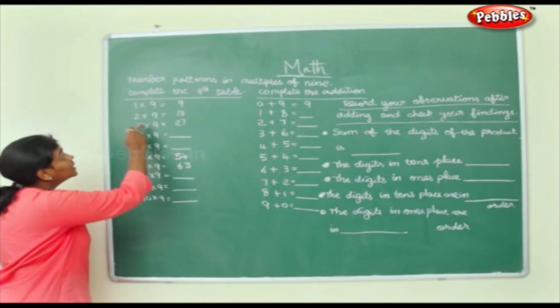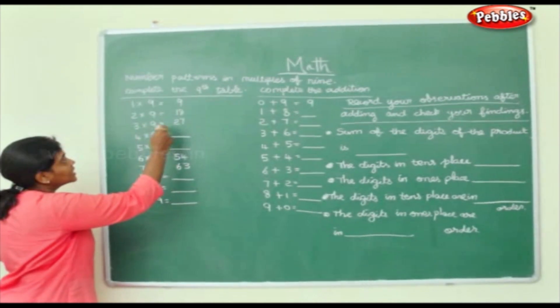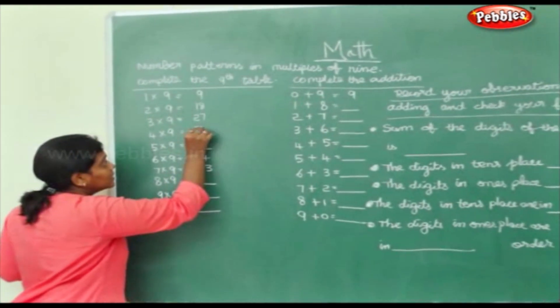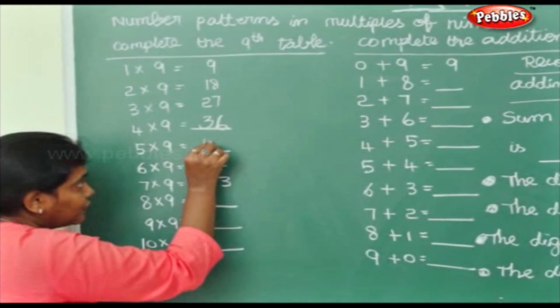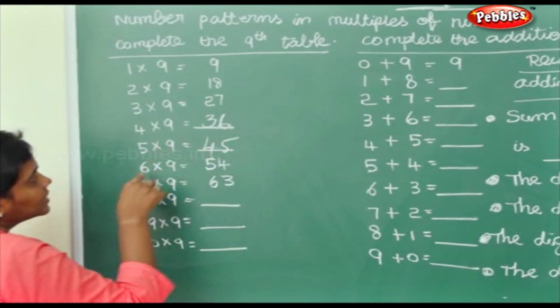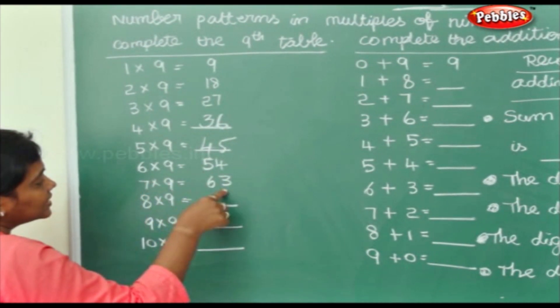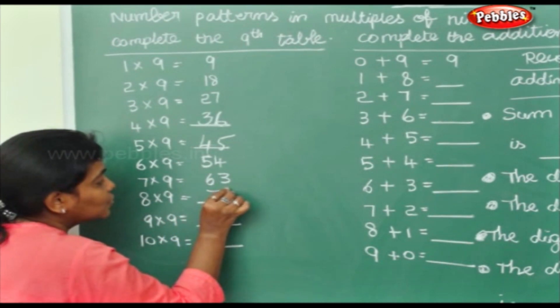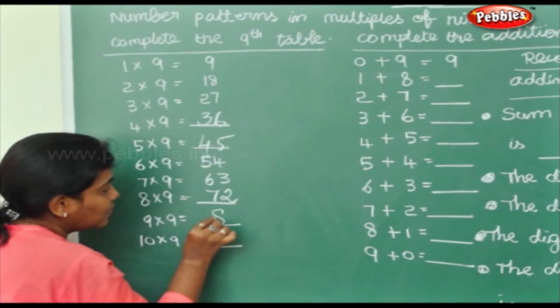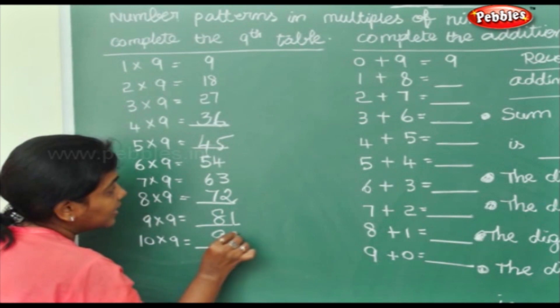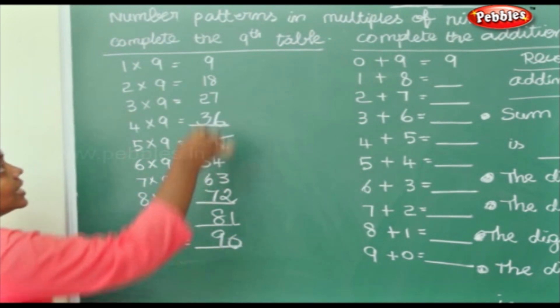1 9's are 9, 2 9's are 18, 3 9's are 27, 4 9's are 36, 5 9's are 45, 6 9's are 54, 7 9's are 63, 8 9's are 72, 9 9's are 81, 10 9's are 90.